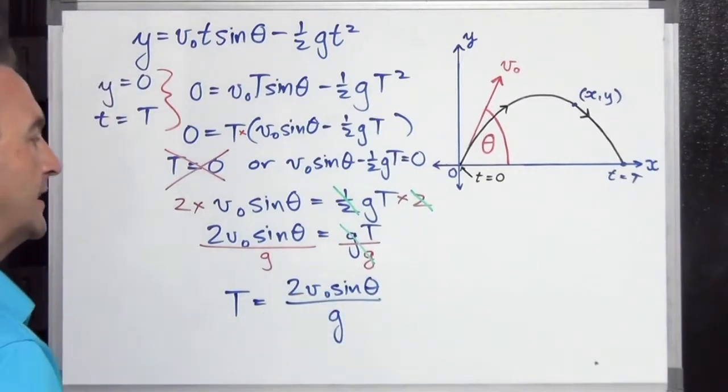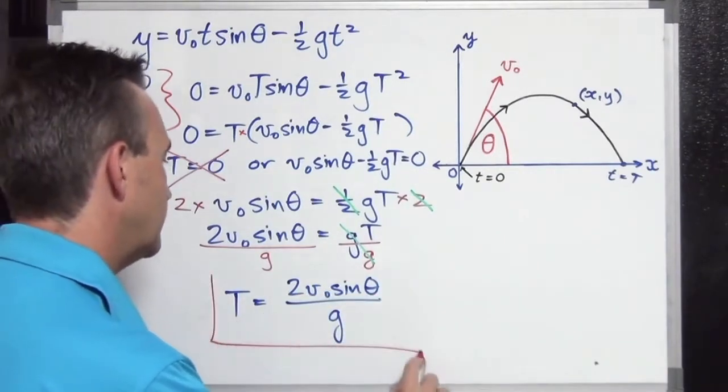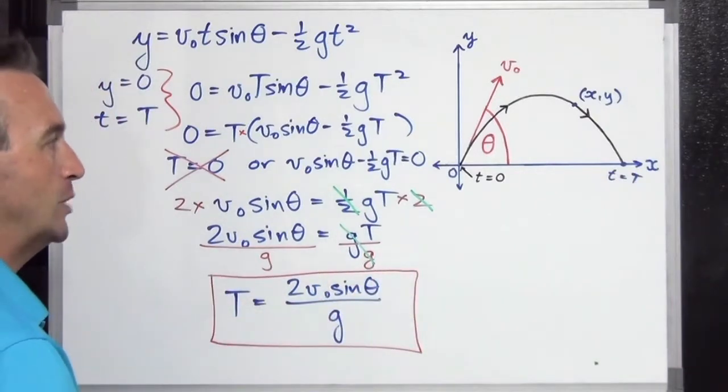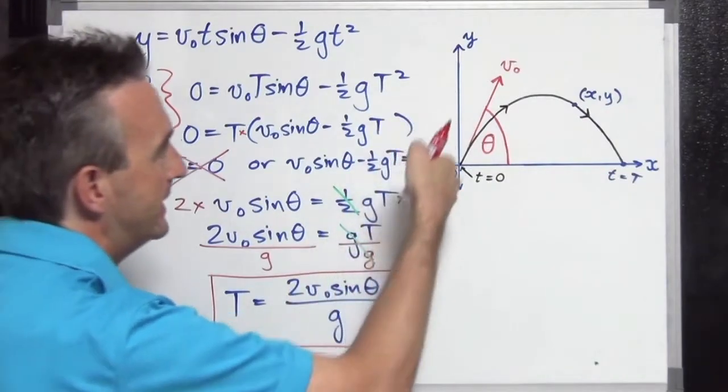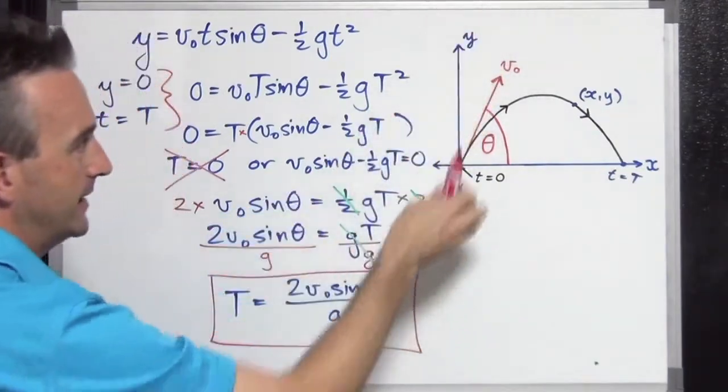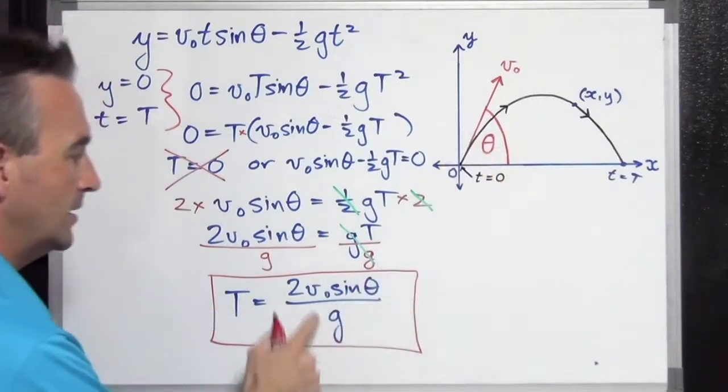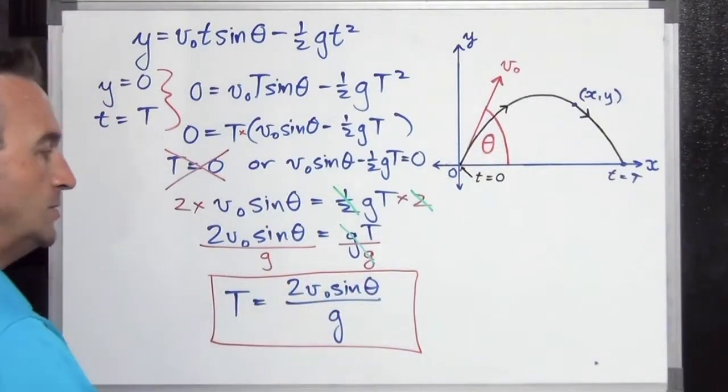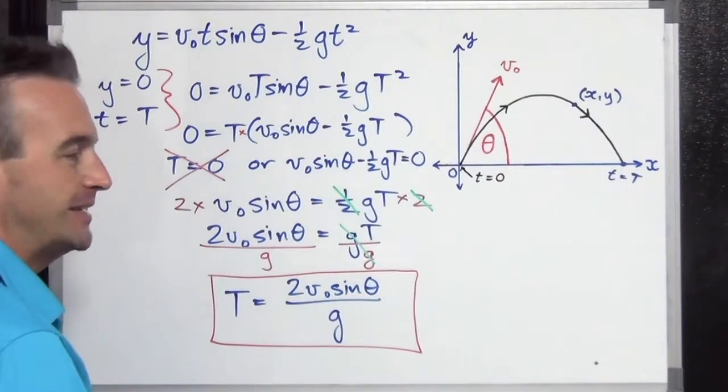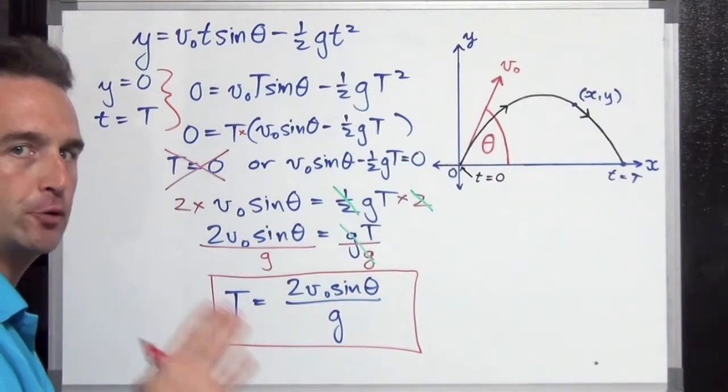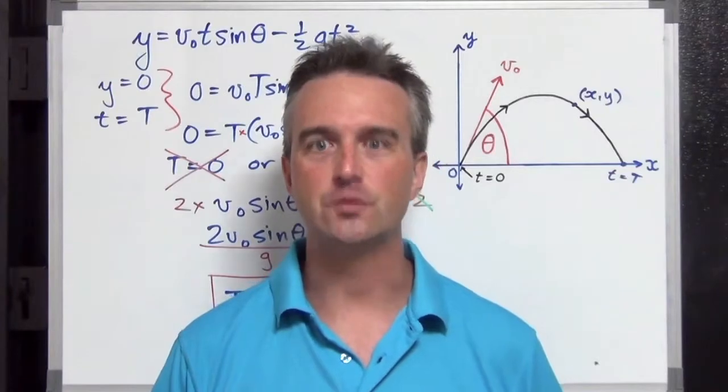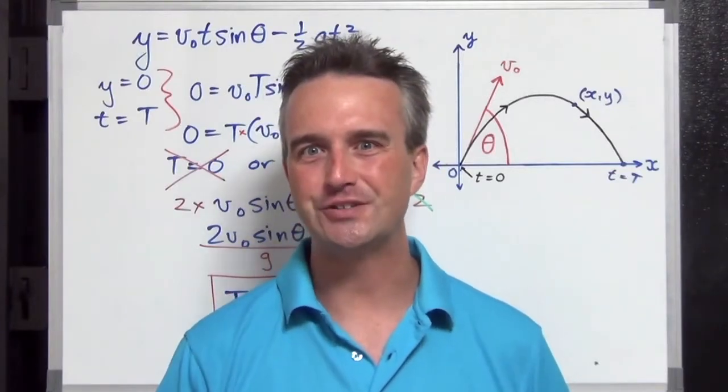And there it is, the formula for the time of flight of a projectile being fired from ground level and landing at ground level. Two times the value for the initial velocity that it's being fired at this angle, theta, so sine of this angle times the velocity times two divided by your G value, acceleration due to gravity. There you go. Time of flight of a projectile. I hope you found this useful. Thanks for watching, and we'll see you again soon.